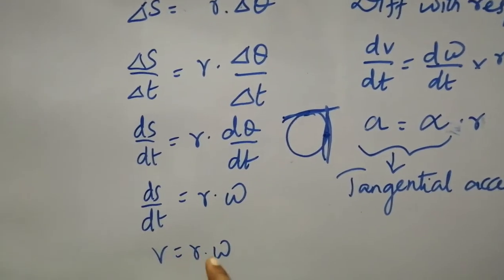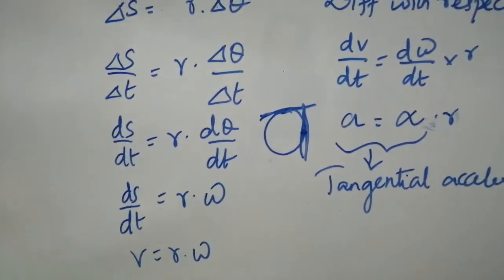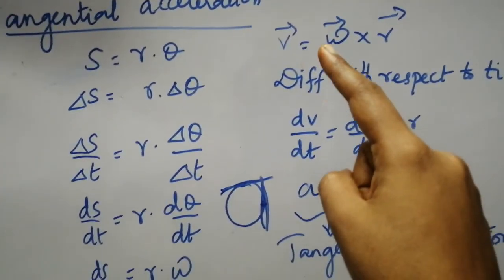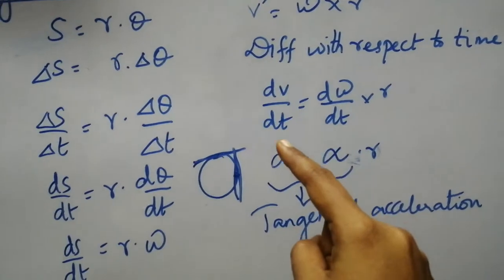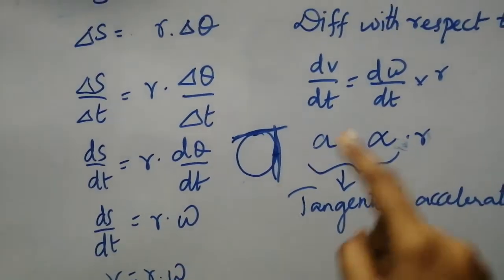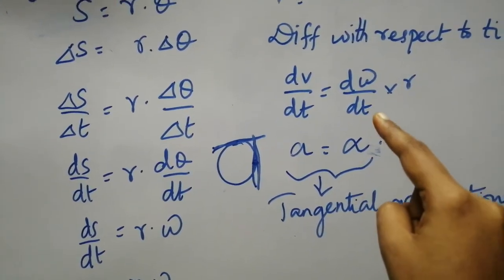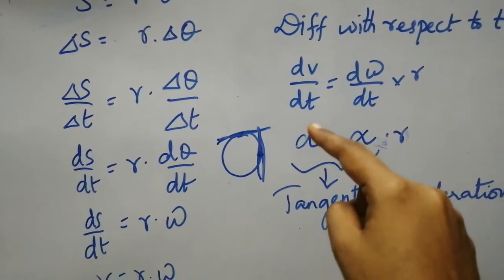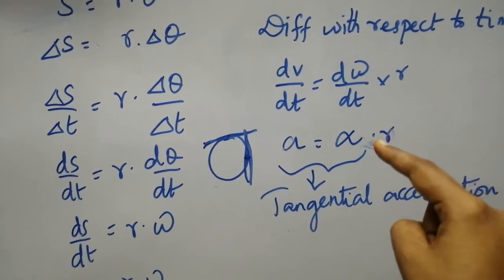So now we have got the relationship between velocity. What we have to get is acceleration. So from velocity when you differentiate with respect to time you get acceleration, isn't it? So I am going for velocity differentiate with respect to time. So it is DV by DT is equal to R into D omega by DT. What is this D omega by DT? It is angular acceleration alpha. And what is this DV by DT? It is linear acceleration A. So A is equal to angular acceleration alpha into R.